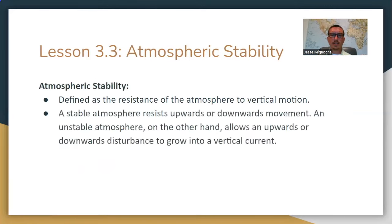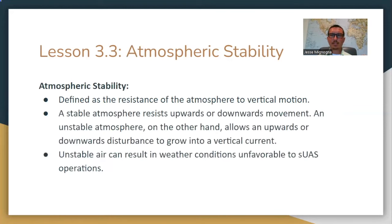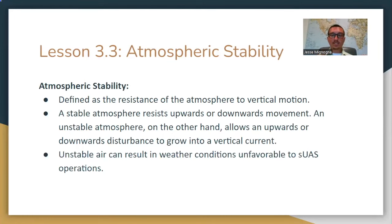Atmospheric stability is defined as the resistance of the atmosphere to vertical motion. A stable atmosphere resists upward and downward movement. An unstable atmosphere allows an upward or downward disturbance to grow into vertical currents. Vertical currents are bad — that's what creates turbulence. We like stable conditions with horizontal currents. Unstable air can result in weather conditions unfavorable to SUAS operations.